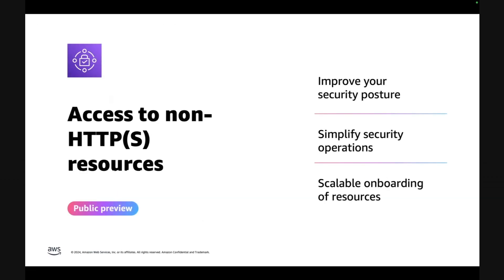Based on this understanding, we launched a new feature of Verified Access. This feature is in public preview. With Verified Access for accessing non-HTTP resources, you can improve your security posture by providing zero-trust access to your non-HTTP resources. You can simplify your security operations by using just one solution, one tool to manage access for all your applications and resources on AWS. And finally, you can onboard resources at scale without spending too much time.